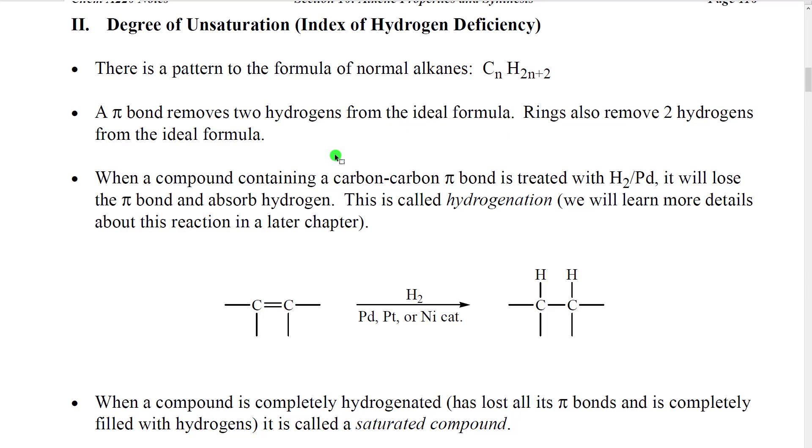What was then discovered was that molecules that had what we now know as pi bonds but really double bonds would have 2 fewer hydrogens than would be found in the ideal formula based on the number of carbons. Similarly, molecules that had rings also had 2 fewer hydrogens than the ideal number of hydrogens based on this formula.